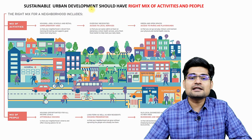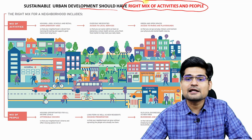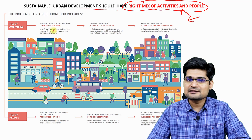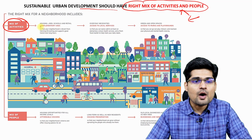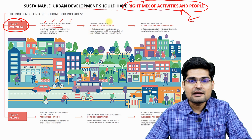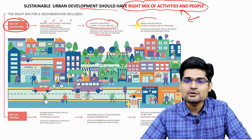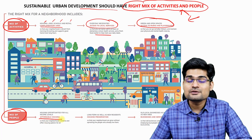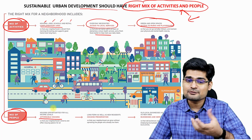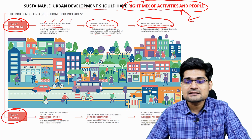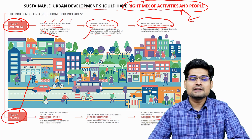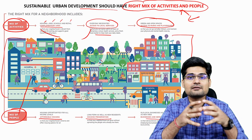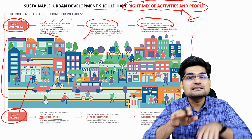Sustainable urban development should have a right mix of activities and people. The mix of activities includes complementary uses of housing, jobs, schools and retail, everyday necessities and access to local services, and green and open spaces. The mix of people includes affordable housing — remember the 3A concept: affordability, availability and accessibility — along with housing preservation and business and service preservation. When all of these combine together in a network, we have a smart futuristic city.